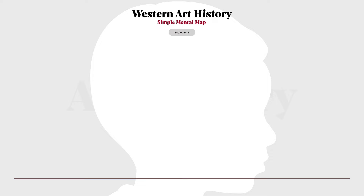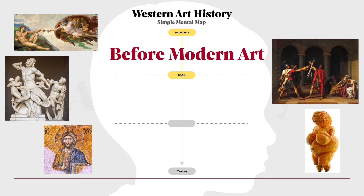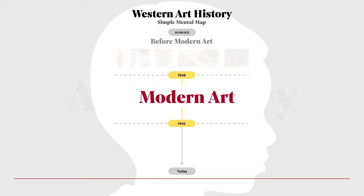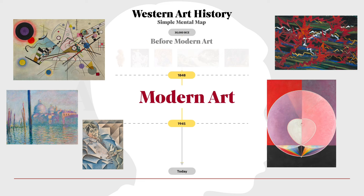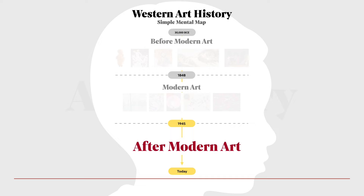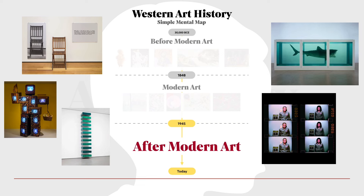Let's start by dividing the entire Western art history into three segments. Pre-modern art — before 1848 — you'll see lots of figurative artworks here, where the subject matter is recognizable, such as people and objects. Modern art, 1848–1945, a lot of abstract artworks here, where the focus is on aesthetics such as colors, shapes, and lines. After modern art — after 1945 — a lot of exploration of new art forms that aren't just paintings and sculptures. There's video, dead animals, performances. The list goes on.